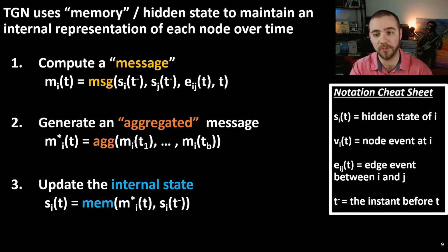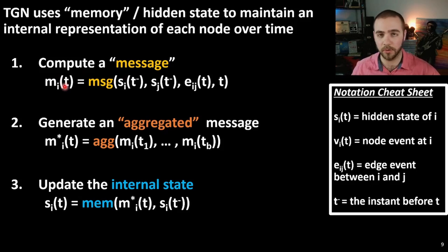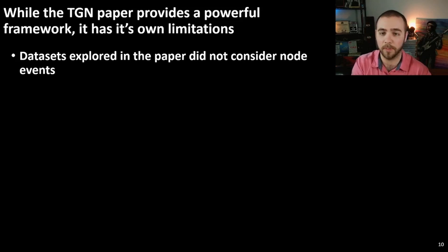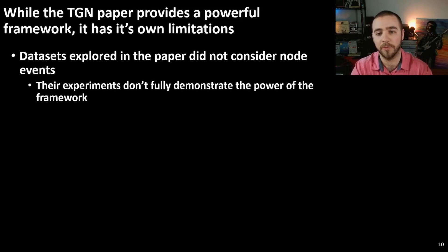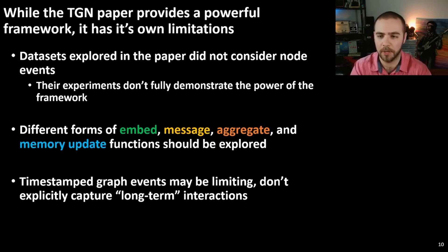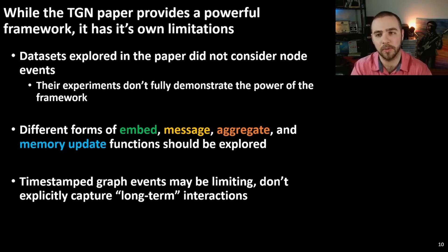The TGN model is extremely general, providing a very general way to update and notionally define the internal state of individual nodes on a graph. However, this paper does have its own limitations. The datasets explored do not necessarily consider node events, even though the architecture claims to handle them, so their experiments don't fully demonstrate the power of their framework. Different forms of the embed, message, aggregate, and memory update functions should be explored for different application areas. And I believe that timestamped graph events may be limiting in some sense, as they don't explicitly capture long-term interactions — they don't allow you to define an edge for more than a single instant in time.